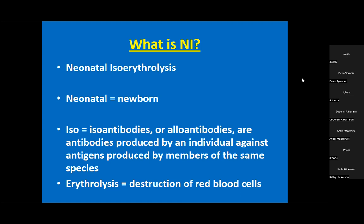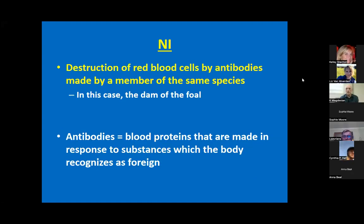Basically, NI is when the mare is making antibodies against her own foal's red blood cells. Red blood cells are vital to survival because they carry oxygen to the tissues. When there's destruction of red blood cells the animal develops anemia, which leads to decreased oxygen delivery to tissues, cells, and organs. The antibodies get into the foal through the colostrum - that first milk the mare produces after birth.